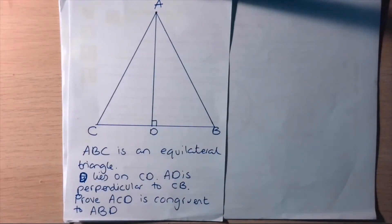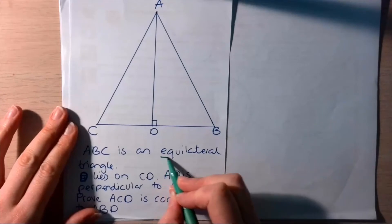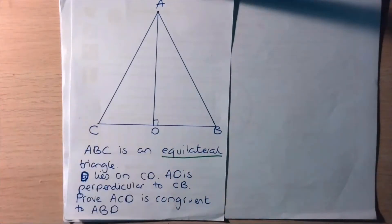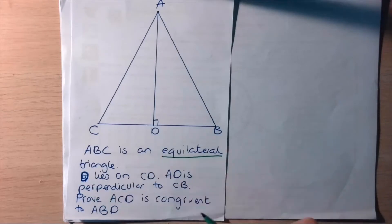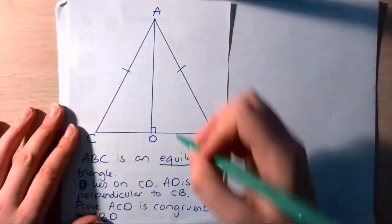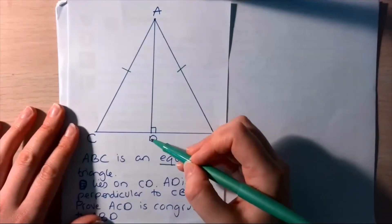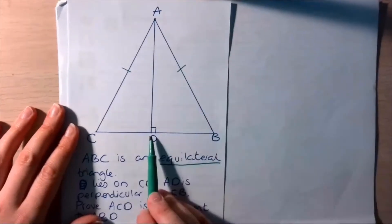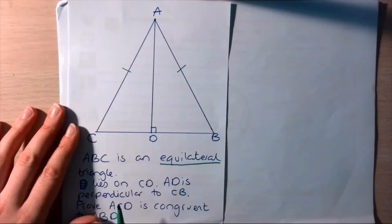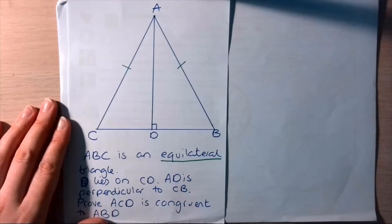The first thing we're told: ABC is an equilateral triangle — that's an important note. Equilateral triangles have all sides of the same length, so we can start to label the things that we know. We know that this side and this side are exactly the same length, and this side is going to be the same length too. We also know that equilateral triangles have all the same angles.